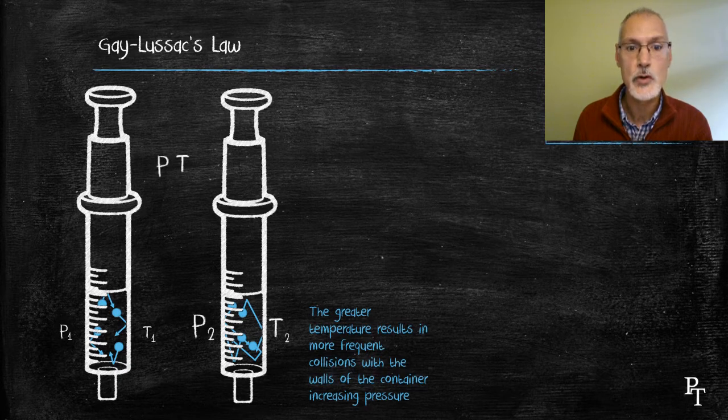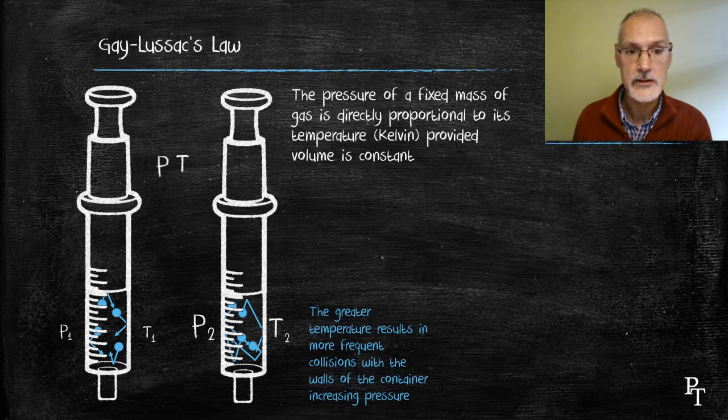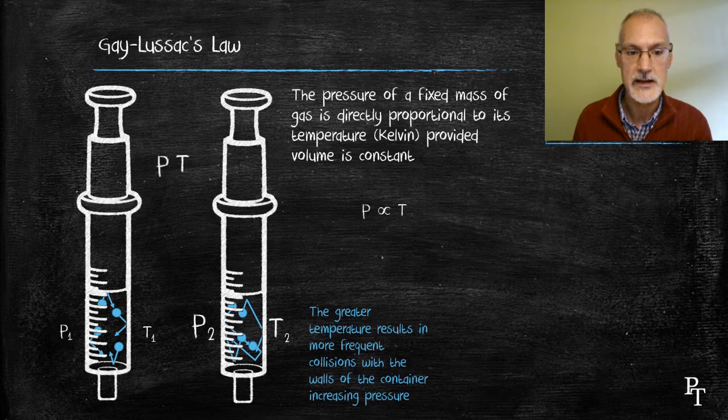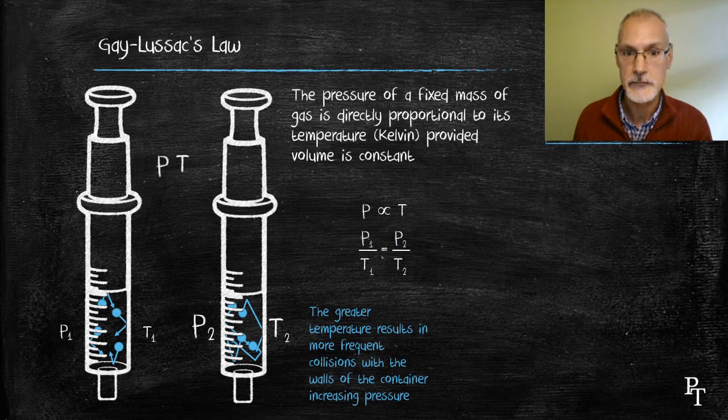Again, this is an example of what we call a proportional relationship, much like Charles' law. So the pressure is directly related or directly proportional to the temperature. Again, it must be in the Kelvin scale. There's my statement using proportionality and again using ratios. So my initial pressure over my initial temperature is equal to my second or final pressure over my final temperature.